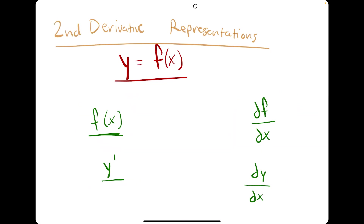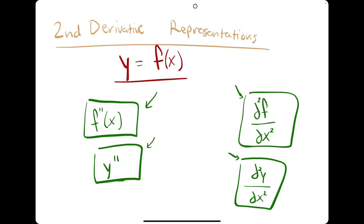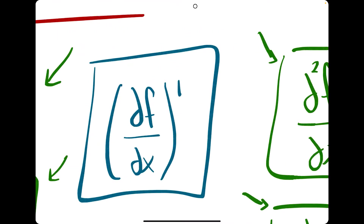This extends to second derivatives. Instead of just f prime, for a second derivative you might see f double prime with two apostrophes, or y double prime with two apostrophes. You might see d squared f over dx squared, or d squared y over dx squared — these all represent the second derivative. Really, the second derivative is just finding the derivative twice. Another representation you might see is the derivative of df over dx written with a prime apostrophe on the outside — that also represents the second derivative, because df over dx on the inside is the first derivative, and the apostrophe on the outside means derivative again. So we have the derivative of the derivative, which is the second derivative.